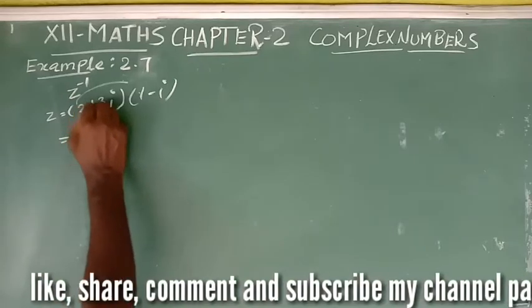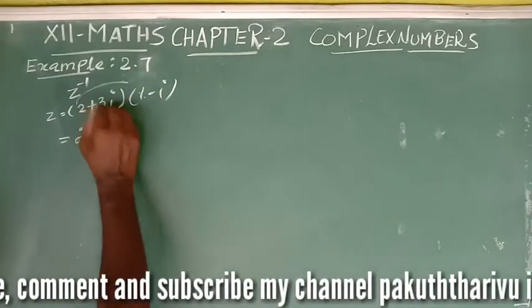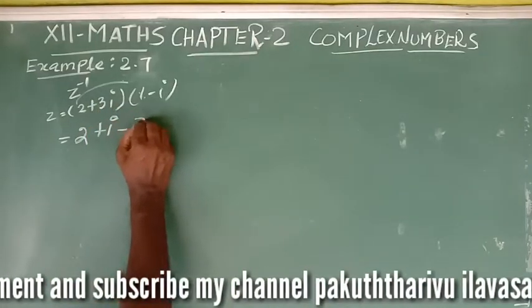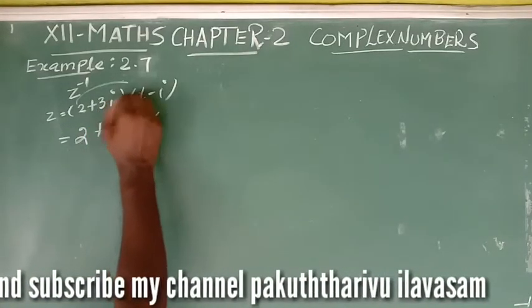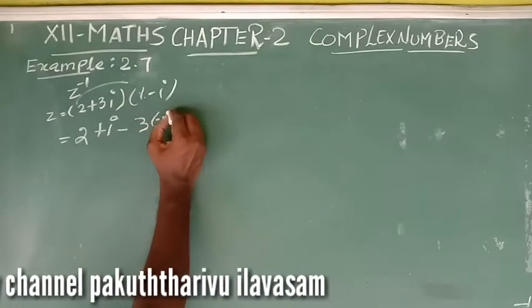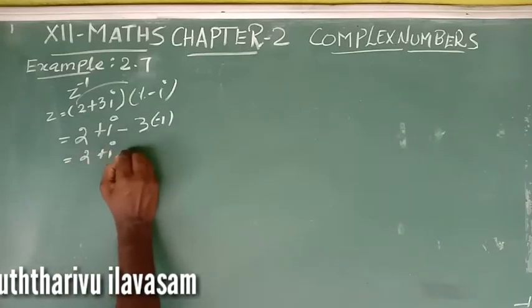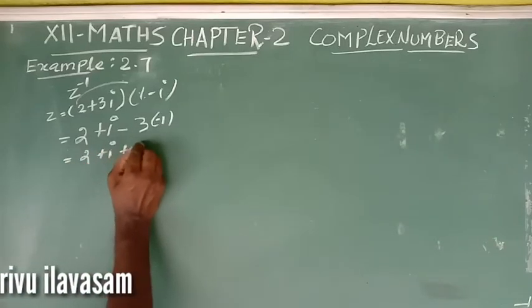So 2 plus 3i into 1 minus i. This gives us 2 minus 2i plus 3i minus 3i squared. Since i squared is minus 1, minus into minus gives plus 3.